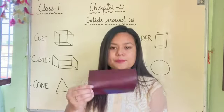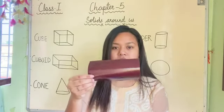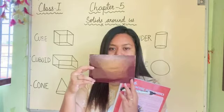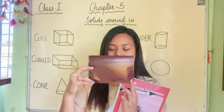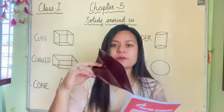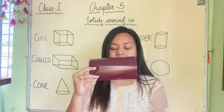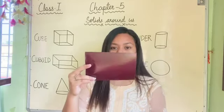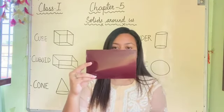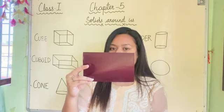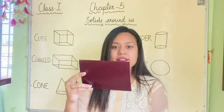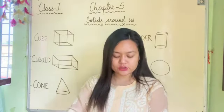Now, next shape. Which shape is this? It has four sides. Opposite sides are equal. Which shape? Rectangle. Very good, children.